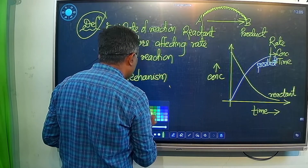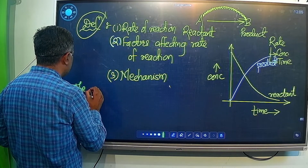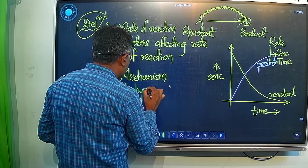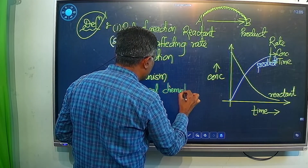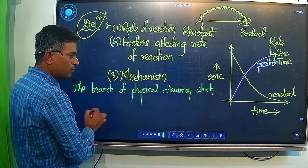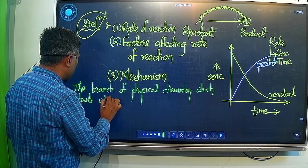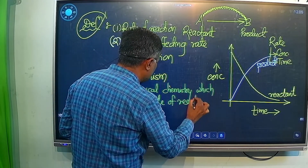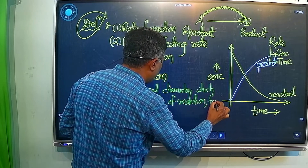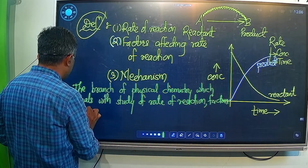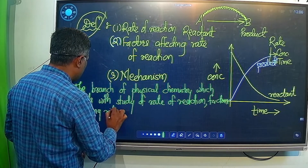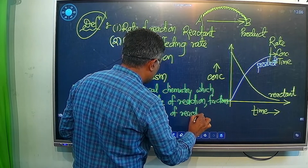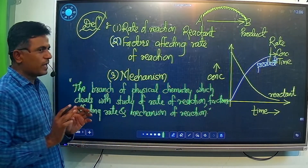Depending on that, we are going to define what we mean by chemical kinetics. The definition: chemical kinetics is the branch of physical chemistry which deals with the study of rate of reaction, factors affecting the rate, and the mechanism of the reaction.